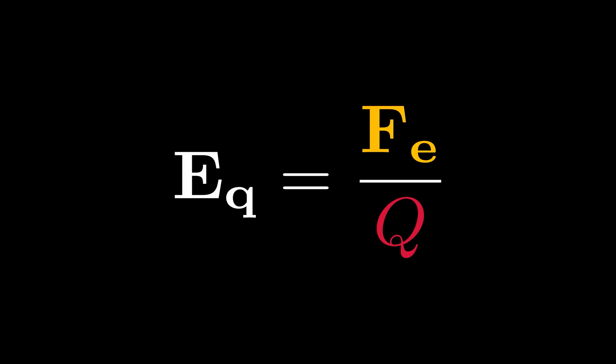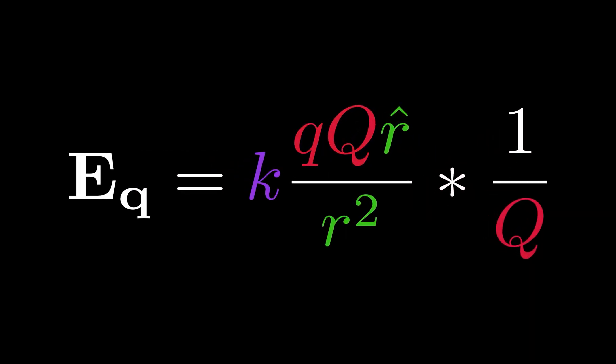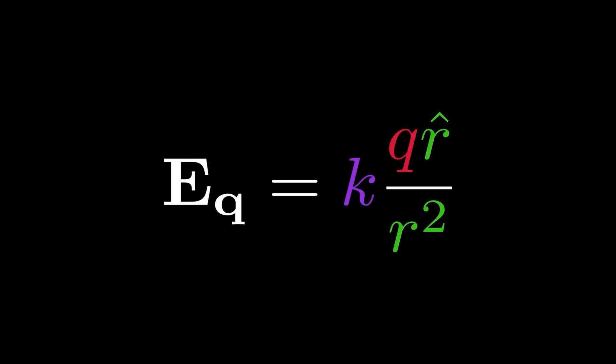Note that it doesn't really matter for our situation what the charge of big Q actually is. For instance, electric field tells you the ratio of force to charge, so that ratio will stay the same no matter what big Q you pick. Therefore, to get from our force equation to the field generated by little q, all we have to do is divide the force equation by big Q and our field pops out.